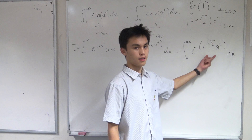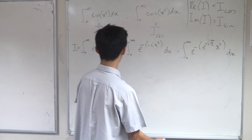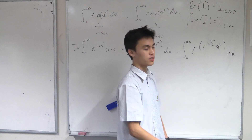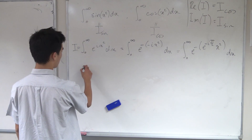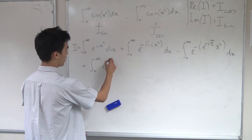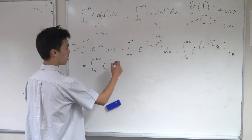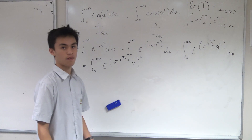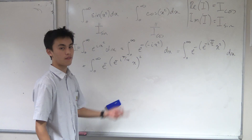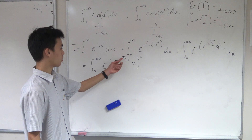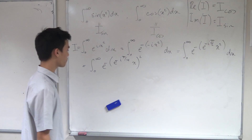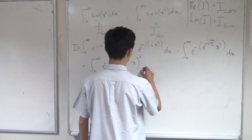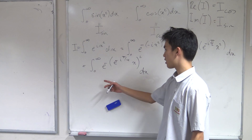We want something squared, so let's factor out a power of two. We can factor out a half from the exponent minus i pi over two, giving e to the minus i pi over four. So the integral becomes the integral from zero to infinity of e to the minus, e to the minus i pi over four times x, all squared, dx. You can verify: squaring gives x squared and the angle becomes minus i pi over two, which matches.